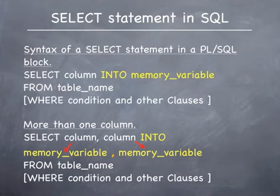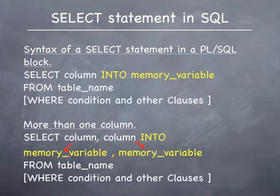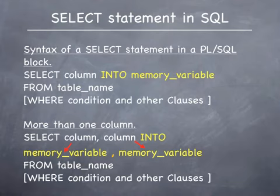The second select statement shows the syntax to be used when retrieving two columns. It reads as: select column_name, column_name into memory_variable, memory_variable from table_name, followed by the optional where clause or any other clauses. The point is that when more than one column is to be retrieved, you would have to create corresponding memory variables for each of the columns. You will list the memory variables in the INTO clause, each memory variable corresponding to the column based on position.